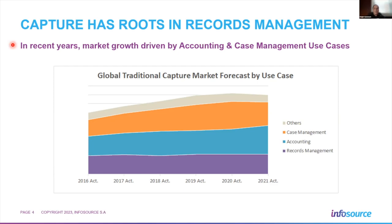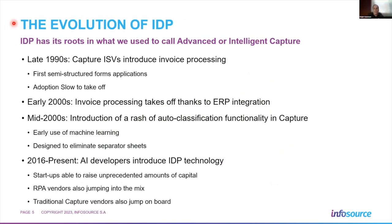How did capture lead to IDP? It started in the late 1990s with what was called advanced or intelligent capture. The first application was invoice processing, now probably one of the killer apps for capture and IDP technologies. The biggest advancement was going from processing structured forms — like tax forms, health claims forms, and surveys where the same information shows up in the same spot — to handling invoices, which don't follow that pattern.